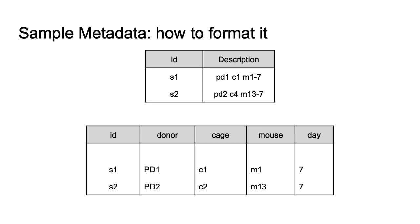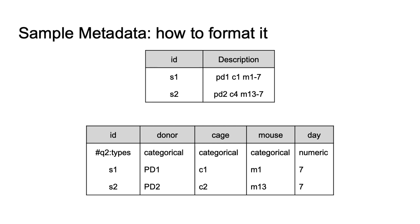So here, instead of having a description column, I've got a donor column, a cage column, an individual column, and a day column. I like to format this data as a string that's a little bit more descriptive, because then when I make my figures, I can look at it and know the answer. If this doesn't work for you for whatever reason, I recommend using the Q2 types functionality as you put together your data. You can specify whether a column is a category, even if you code it as a zero or one, or a number — and this is just useful as you think about how you format your metadata.